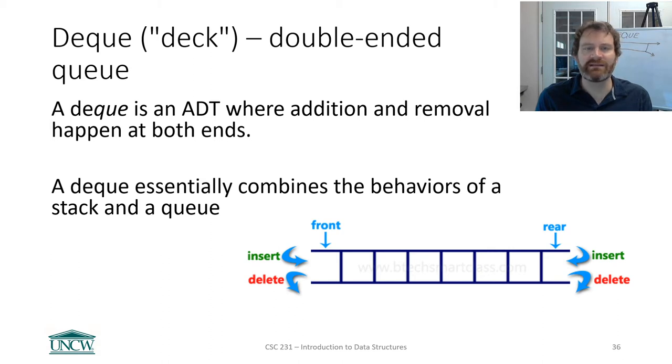A deque is an ADT where addition and removal happens at both ends. You can say that it essentially combines the behaviors of a stack and a queue. It has a notion of a front and a rear, just like a regular queue does, but you are allowed to add to the front, remove from the front, add to the rear, and remove from the rear. What differentiates this from a list? You can only operate at either end. You have more flexibility in what you do at either end, but the operations all happen at the end. You don't work in the middle. You can't get random elements out of the middle of this thing.